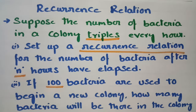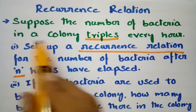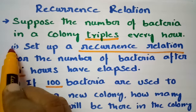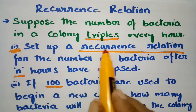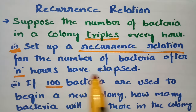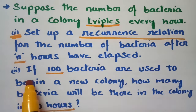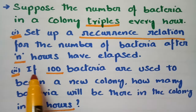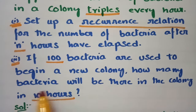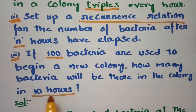Today's video I am going to explain the most important problem from recurrence relations. This is related to discrete mathematics. Suppose the number of bacteria in a colony triples every hour. The first question is to set up the recurrence relation for the number of bacteria after n hours have elapsed. The second question is: if 100 bacteria are used to begin a new colony, how many bacteria will be there in the colony in 10 hours?